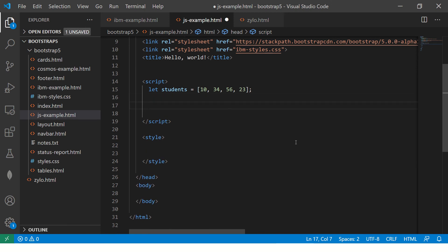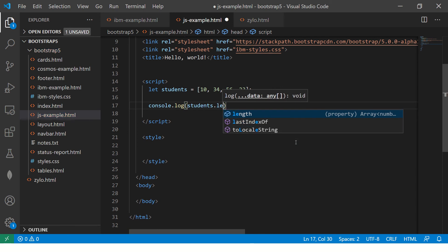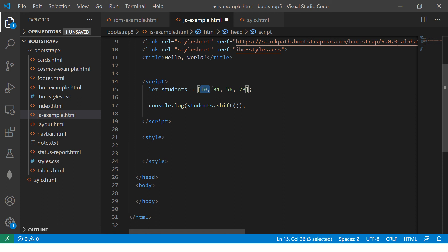Alright, so we have console.log students.length. When you do length, of course you will get four because we are not doing any operation. But now we are doing shift, and what does shift do? It will remove the first element at the beginning of the array.